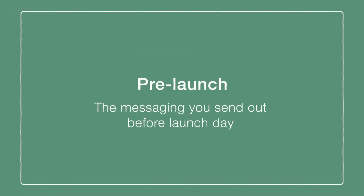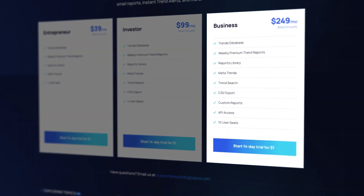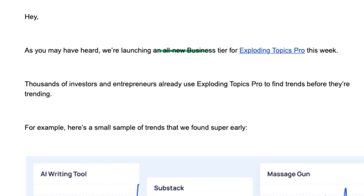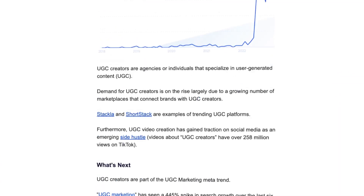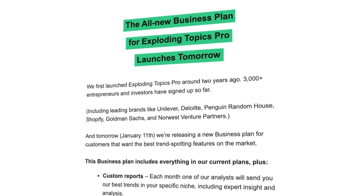Let's get into the first step: the pre-launch. The pre-launch is just like it sounds — the messaging you send out before launch day. To give you an example of how mundane something can be and still support a launch: we recently launched a new tier to our pricing, that was literally it. Our pre-launch is basically a little message in our weekly newsletter. With the new plan launch we did a couple months ago, it literally said 'we have a new plan launching tomorrow.'